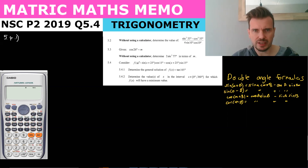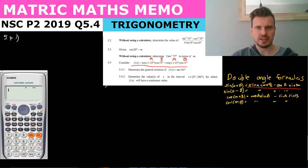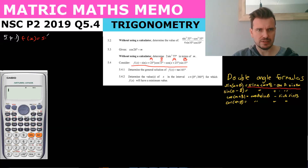This looks like the compound angle formula sin(a - b) = sin(a)cos(b) - cos(a)sin(b). So (x + 25) is our 'a' and 15 is our 'b'. Therefore f(x) = sin((x + 25) - 15), which simplifies to sin(x + 10).